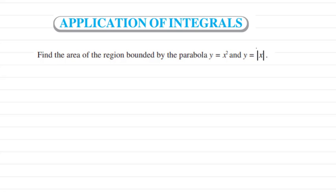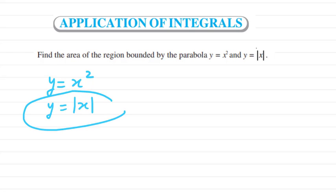Here is the question: find the area of the region bounded by the parabola y equals x squared and y equals mod of x. The first equation is y equals x squared and the second one is y equals mod x, which is not a simple equation.